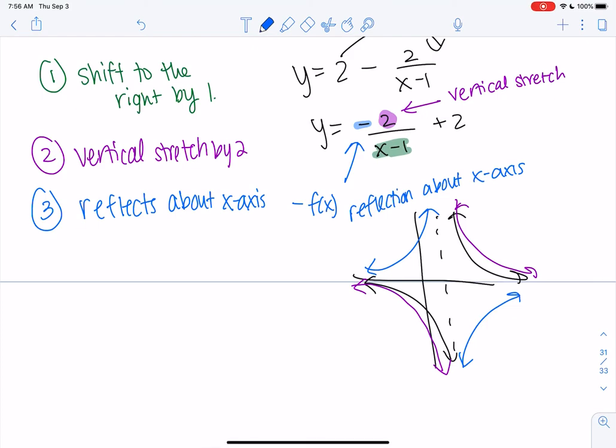And then the final one is the plus 2. I think this is the easiest of all the shifts, the adding or subtracting on the outside. It just means it goes up or down. So this one goes up 2 units.